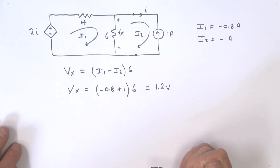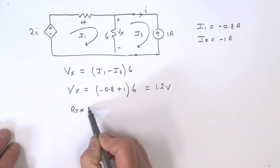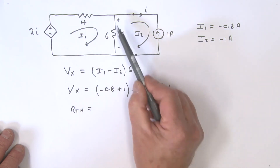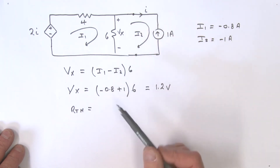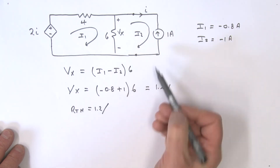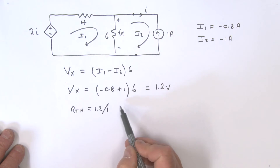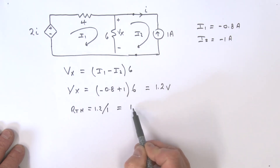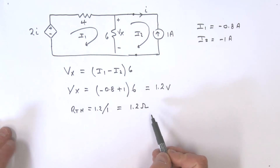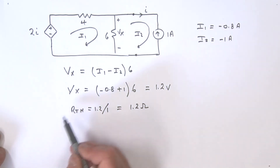So what about the Thévenin resistance? R_Thévenin equals Vx divided by the current we're pushing in: 1.2 volts divided by 1 amp, which equals 1.2 ohms. That's the Thévenin equivalent.